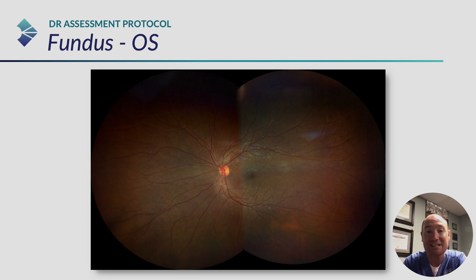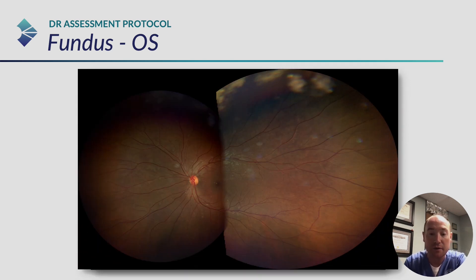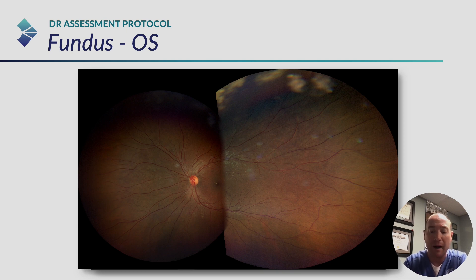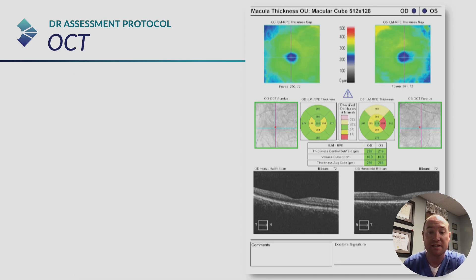Left eye, again, similar picture — mild changes, slight progression from a year ago. Overall, the fundus picture of a young diabetic patient, 33 years old, with uncontrolled A1c of 10.0, but from a structural standpoint looks pretty good. Mild NPDR. There's the OCT — OCT looks good, no macular edema, no major macular ischemia or thinning. That's a pretty good-looking OCT.